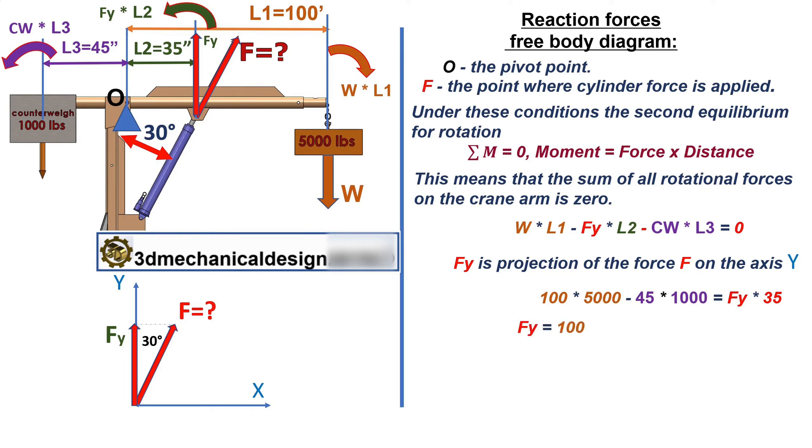Fy equals 100 times 5000 minus 1000 times 45 divided by 35.